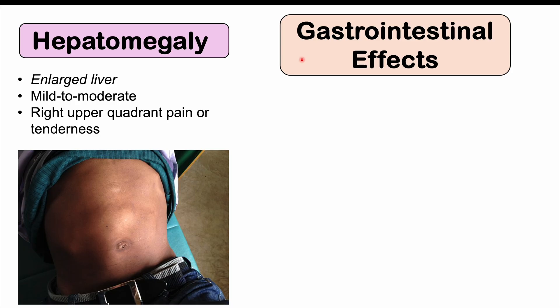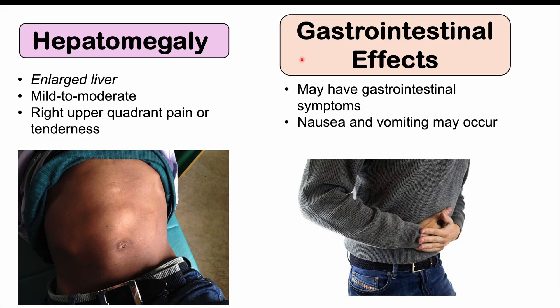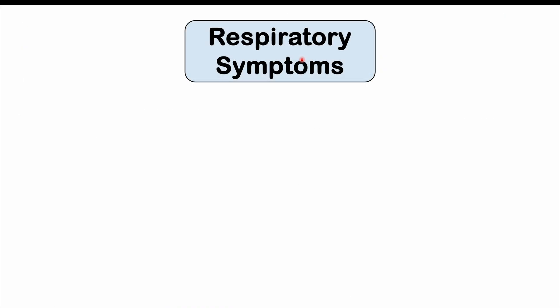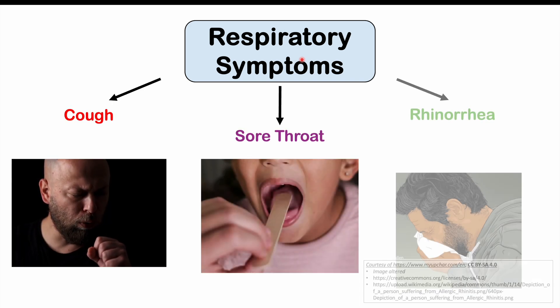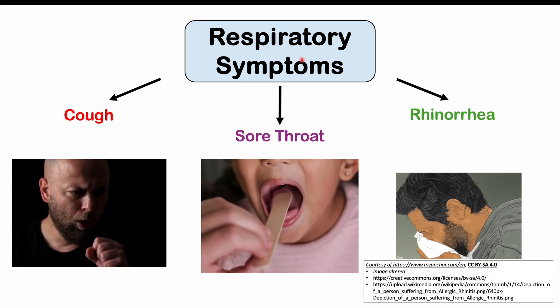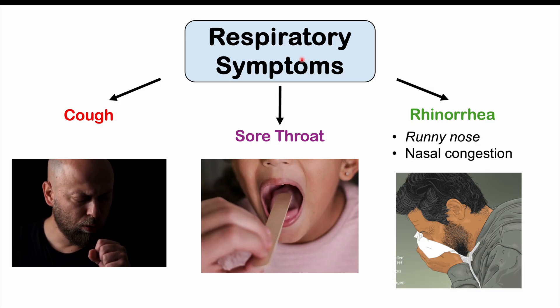We can also get gastrointestinal issues with dengue virus infections. Some patients may have nausea and vomiting, and in some cases — although very rare — diarrhea may occur. Respiratory symptoms can occur in some patients as well, including a cough, sore throat, and rhinorrhea or runny nose, and we can also get nasal congestion.